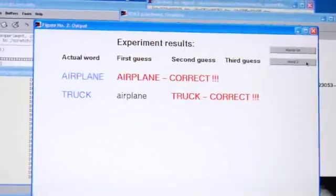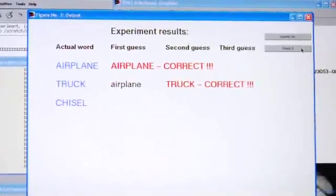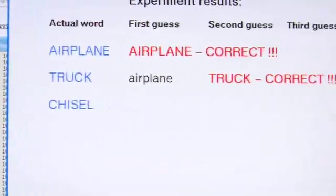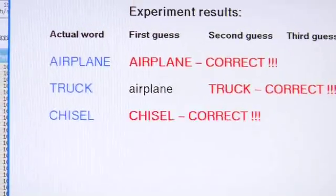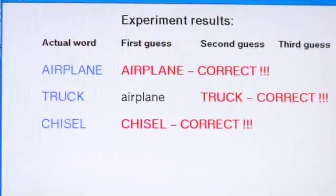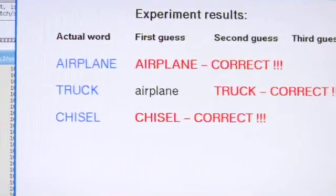Now that we've collected the images from Justin's brain while he was thinking about these eight words, we've asked the computer algorithm to look at the brain imaging data and tell us which word was which. The word was chisel. My first guess is chisel. So it got chisel on the first guess.